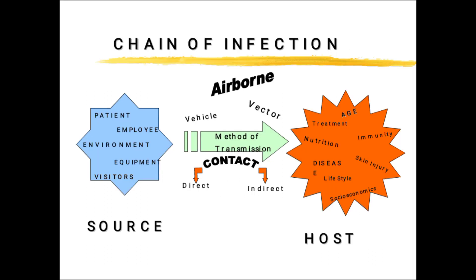Regarding the chain of infection, the involved parties are: patient, employee, environment, equipment, and visitor. Disease can transfer through airborne, vector, or direct/indirect contact methods of transmission. Treatment, nutrition, and lifestyle also affect the host. Enteric precautions follow the indirect and direct contact routes of the chain of infection.